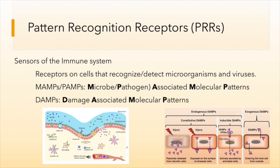Pattern recognition receptors are receptors on cells that recognize and detect microorganisms or viruses. They can detect molecular patterns unique to bacterial cells and viral genetic material. There are two different types of patterns that they recognize. The first are called MAMPs, sometimes referred to as PAMPs.